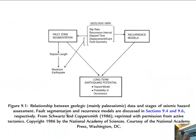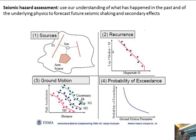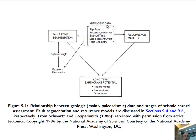McAlpin talks about how the geologic data we gather — things like slip rate, recurrence interval, elapsed time, displacement per event, and fault geometry — is used to do two main things: fault segmentation and the recurrence model. These rely heavily on geologic data, though seismological and geodetic data can also be used. Fault segmentation gives us the expected magnitudes, and the recurrence model feeds into the hazard model.